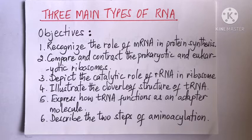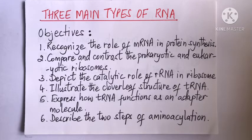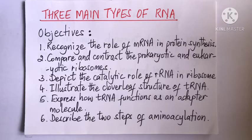2. Compare and contrast the prokaryotic and eukaryotic ribosomes. 3. Depict the catalytic role of rRNA in ribosomes. 4. Illustrate the cloverleaf structure of tRNA. 5. Express how tRNA functions as an adapter molecule. And 6. Describe the two steps of aminoacylation.